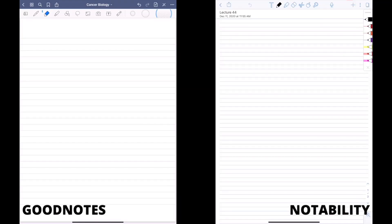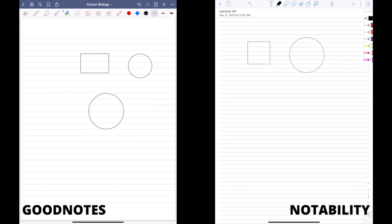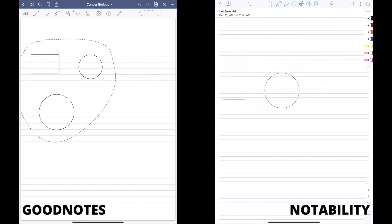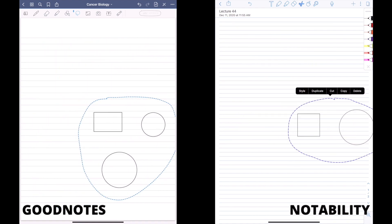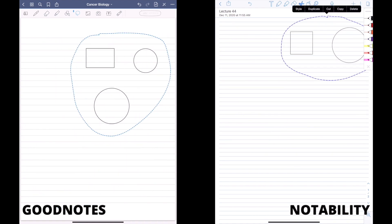There is a shape feature in both GoodNotes and Notability. You basically can draw a shape and hold and then it will turn into a nice clean looking shape. I don't see a difference in how either of them work between GoodNotes and Notability. Both apps also have a lasso feature. This feature allows you to move things in your notes around the page. I don't see a difference between the lasso feature and Notability versus GoodNotes.